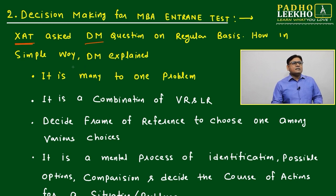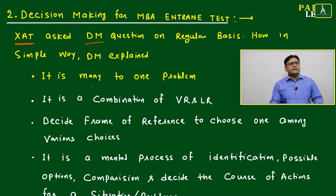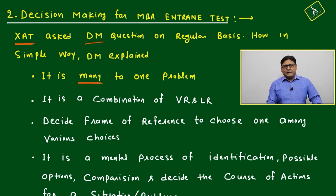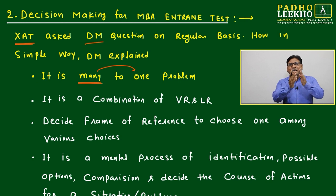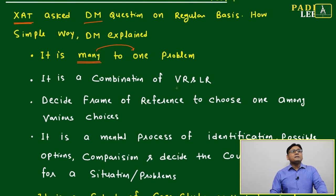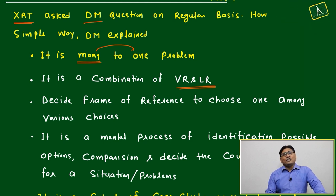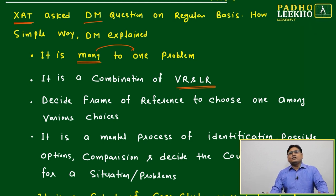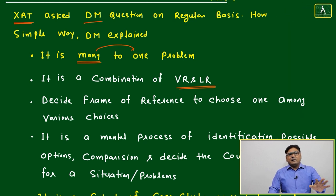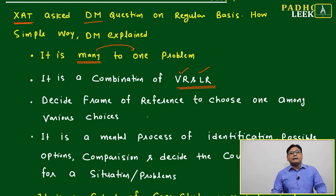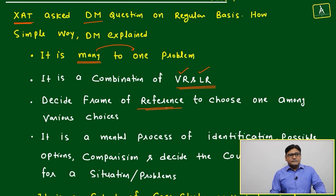In simple terms, decision making can be explained as a many-to-one problem — you have multiple options and you have to convert them into one meaningful option. It is a combination of verbal reasoning and logical reasoning. In your terminology, during CAT preparation, you deal with LR, VR, and DI. Decision making is a combination of VR and LR.